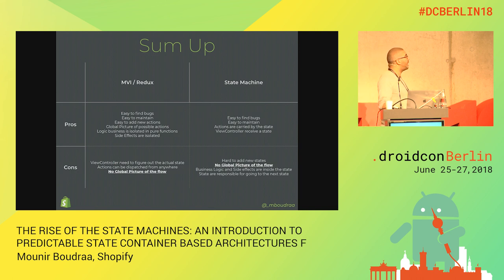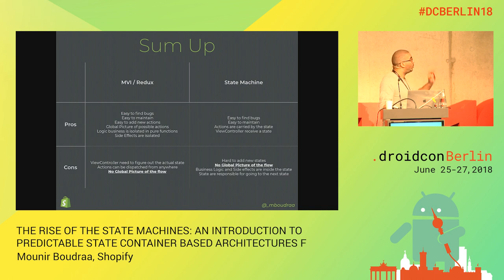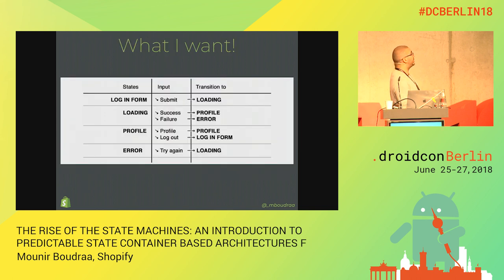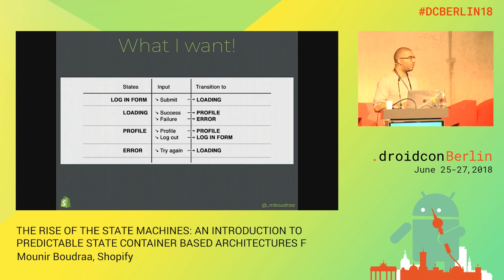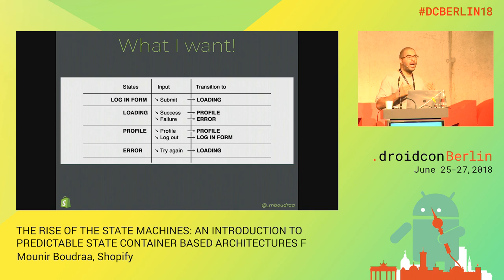Let's try to handle this - how to have a global picture of the flow, how to be sure that concerns are really well separated, and how to have both worlds in the same framework or architecture. What I want in the end is the code version of a transition table. I want to be able to read the code and say: when I'm in the login form state and I submit, I go to loading. When I'm in loading and have success, I go to the profile page, or if there's a failure, I see an error.